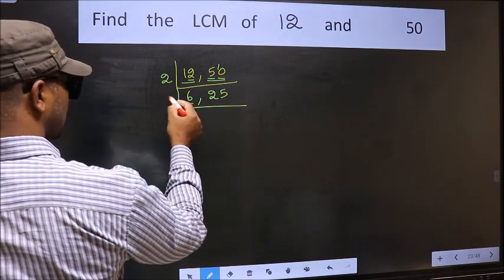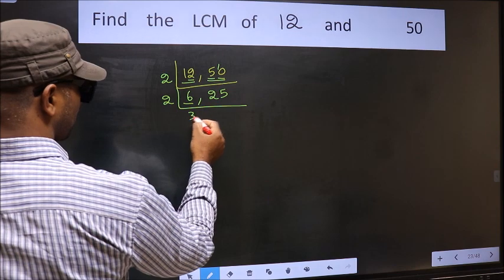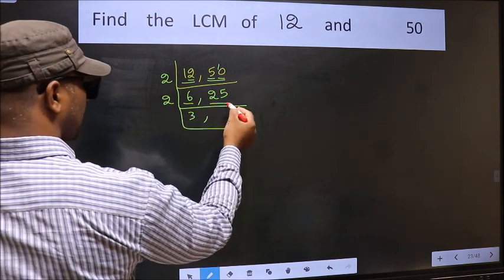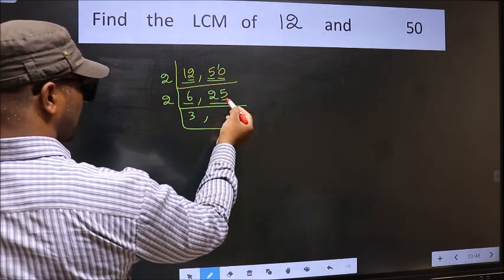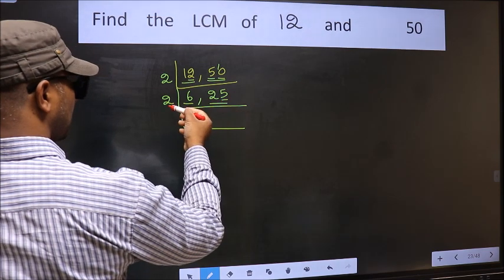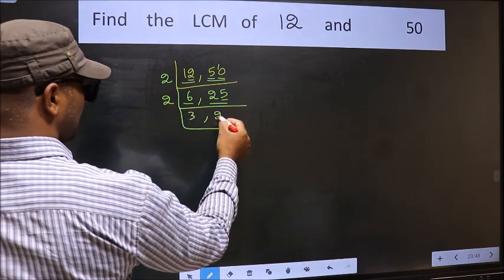Now here we have 6. 6 is 2 times 3 is 6. Now the other number 25, last digit 5, not even, so this is not divisible by 2. So we write it down as it is.